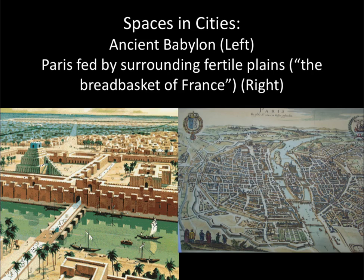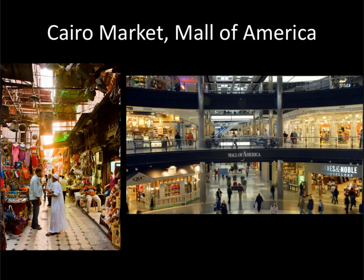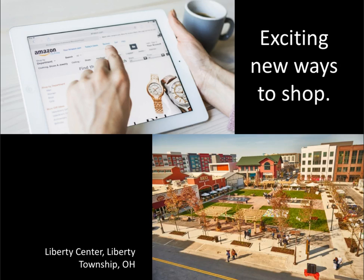Cities also represent very particular spaces. They developed in the ancient Near East around 4000 BC, consolidated power, but were dependent on areas outside the city. In the U.S., the rise of suburban shopping malls in the 1960s and 70s marked the decline of downtowns, leading to the rise of mall culture. How does this Middle Eastern market space compare to the Mall of America? Today, many now-aging malls are under pressure from new kinds of shopping spaces, including the internet. On the right, we see the new Liberty Center north of Cincinnati, which recreates an ersatz urban environment, providing a pseudo-urban shopping experience for suburbanites who may be unwilling to venture into the dangerous city.